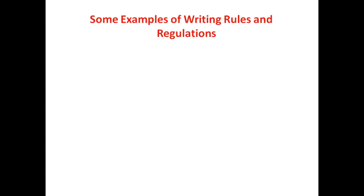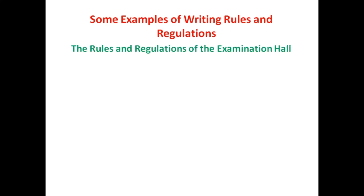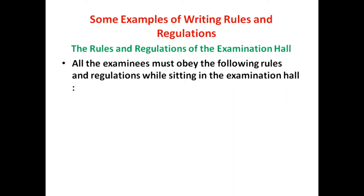Now let's take some examples of writing rules and regulations of certain places. When writing a set of rules and regulations, don't forget to write the headline or title, such as 'Rules and Regulations of the Examination Hall.' It is also better to include a cover sentence before the rules, for example: 'All the examinees must obey the following rules and regulations while sitting in the examination hall.'